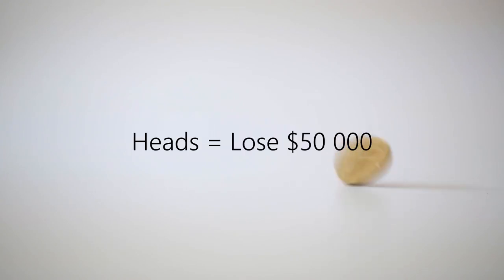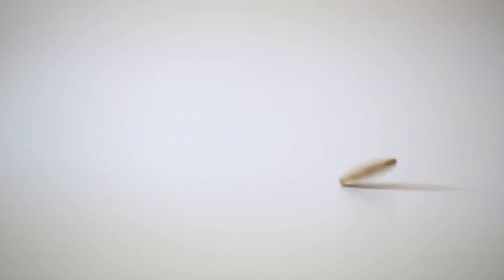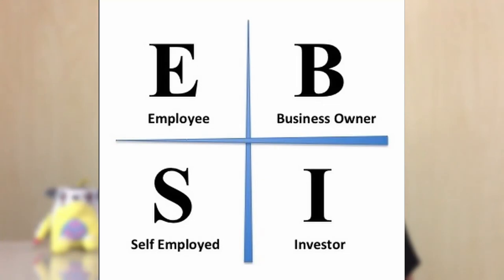Let me ask you a very simple question. If I flip a coin and it lands on heads, you will lose $50,000. But if it lands on tails, you will instantly win $500,000. You can only flip the coin once — will you flip it? Your first instinctive answer of whether you are unwilling to lose the $50,000 or eager to win the $500,000 will show roughly where your mindset lies in the Cash Flow Quadrant.